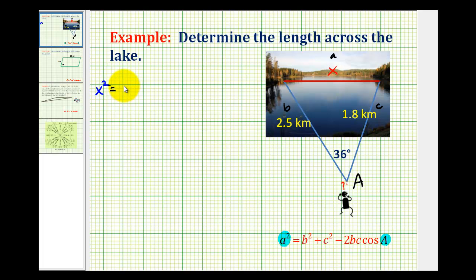So we'd have x squared equals 2.5 squared plus 1.8 squared minus 2 times 2.5 times 1.8 times the cosine of 36 degrees.